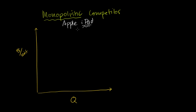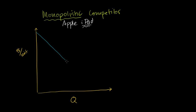Apple has a monopoly in iPads — they don't have a monopoly in tablet computers or in computers in general — but only they can sell iPads. So let's draw the demand curve in the short run for iPads, making it linear to keep things simple. So that is our demand curve. And we know that if that's the demand curve, we're talking about the market for iPads, so the marginal revenue curve will look something like that. That is Apple's marginal revenue curve.